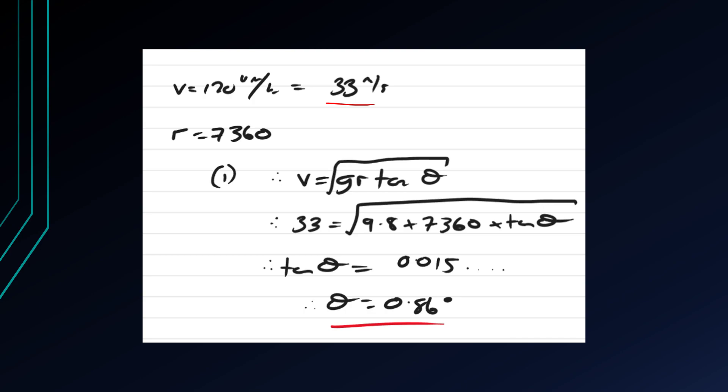So with our angle we get that v equals the square root of 9.8 times 7360 times tan theta. So we get tan theta is about 0.015. So theta is 0.86 degrees.